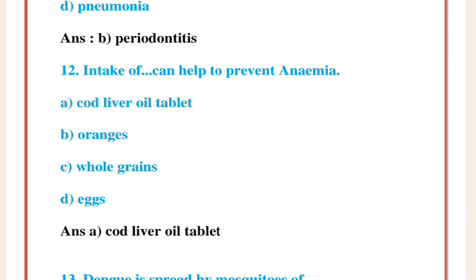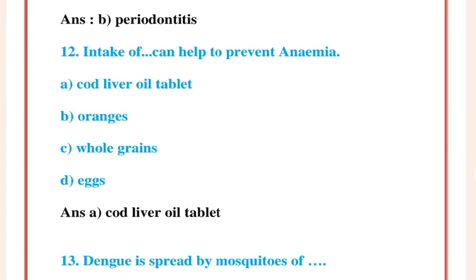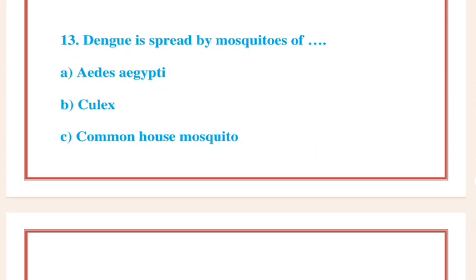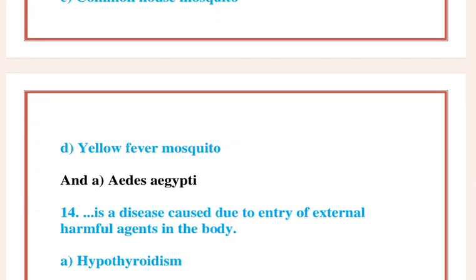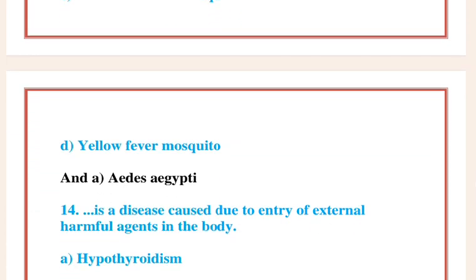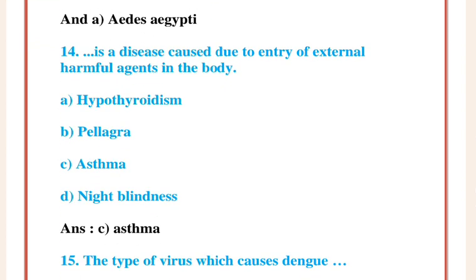Answer A: Cod liver oil tablet. Question 13: Dengue is spread by mosquitoes of Answer A: Aedes aegypti. Question 14: This is a disease caused due to entry of an external harmful agent in the body Answer C: